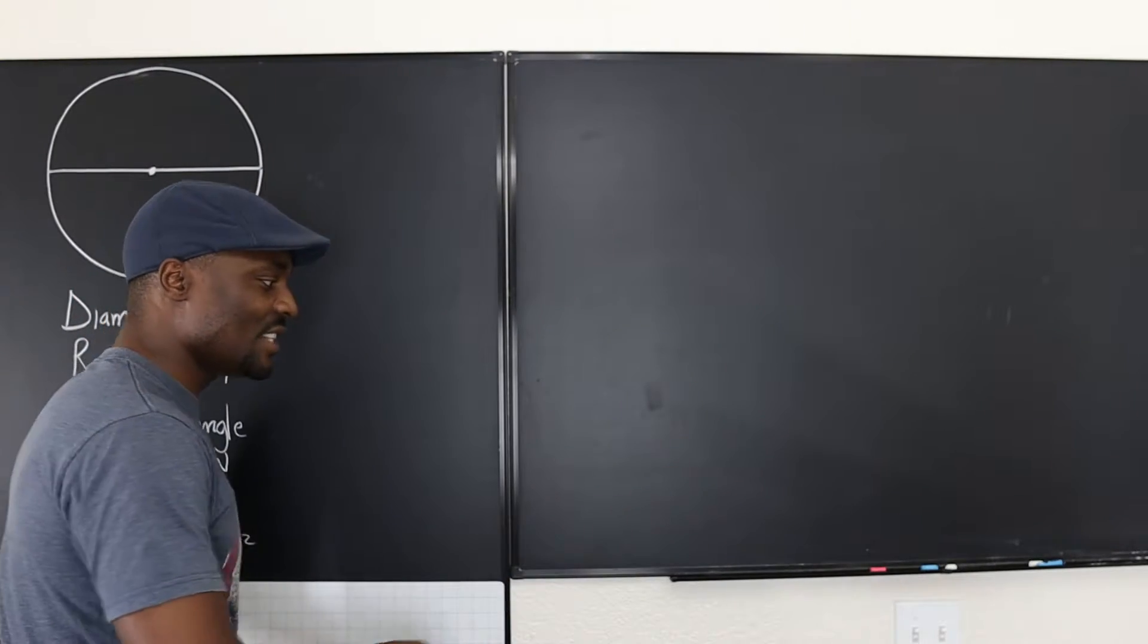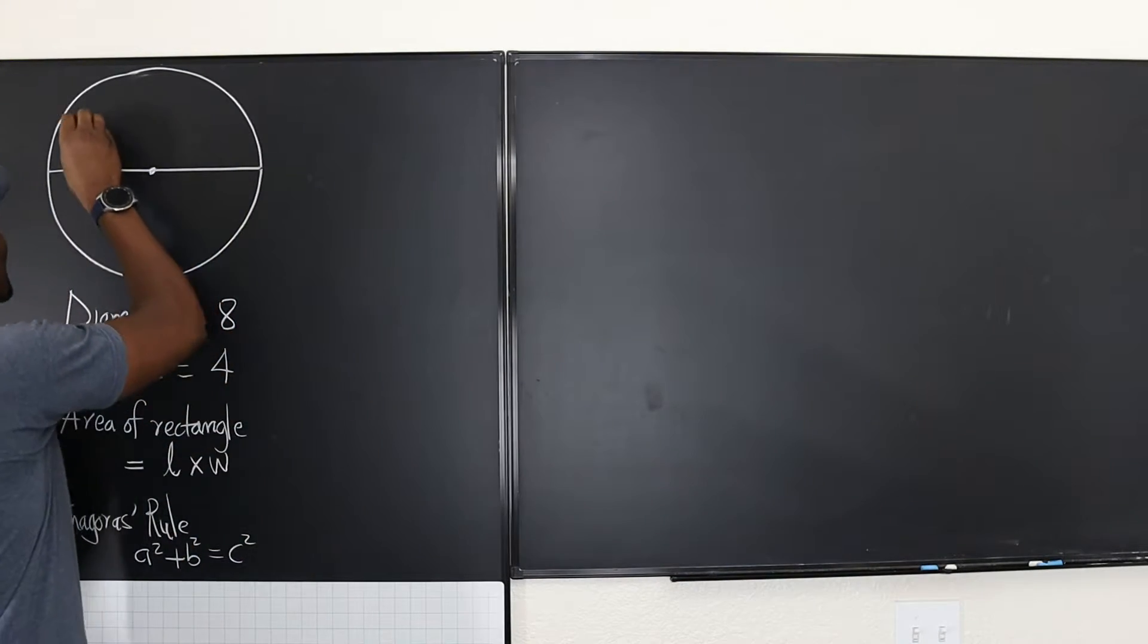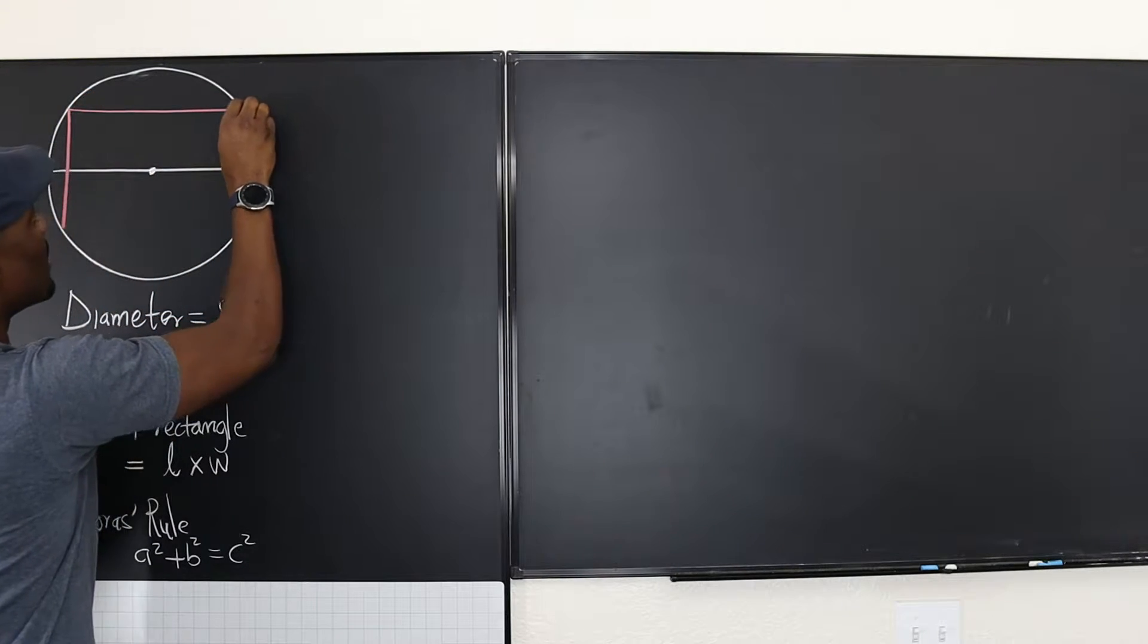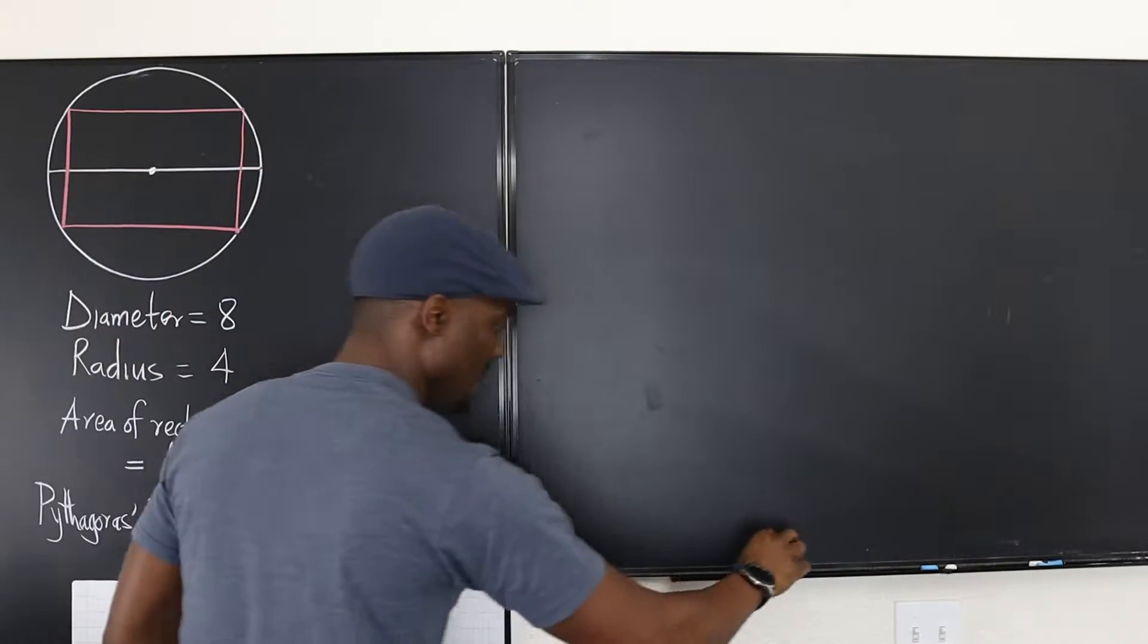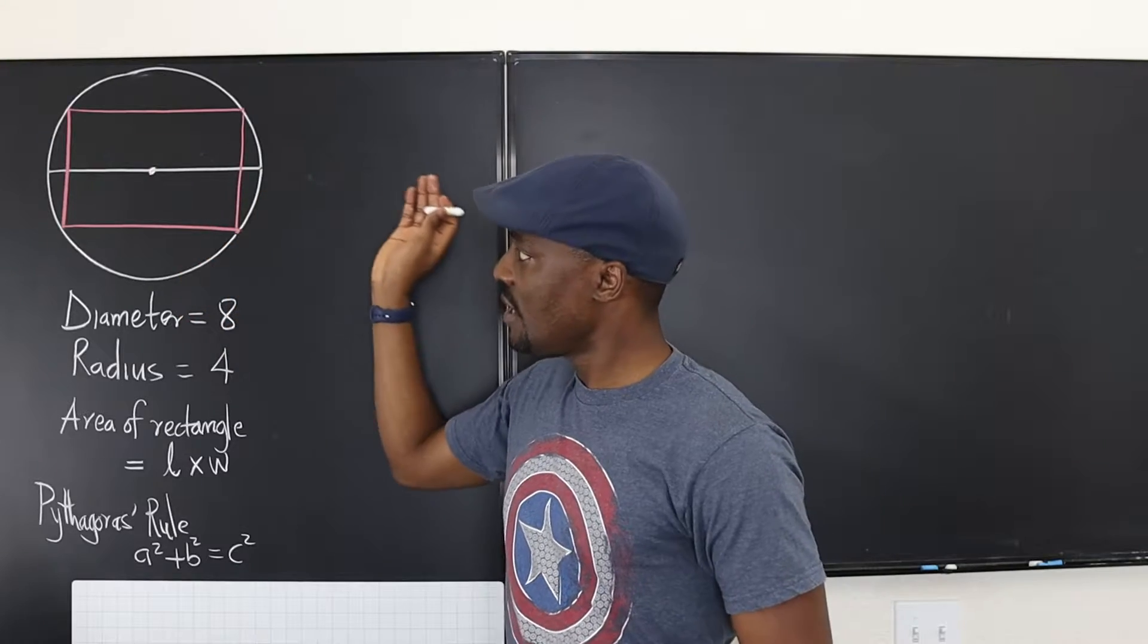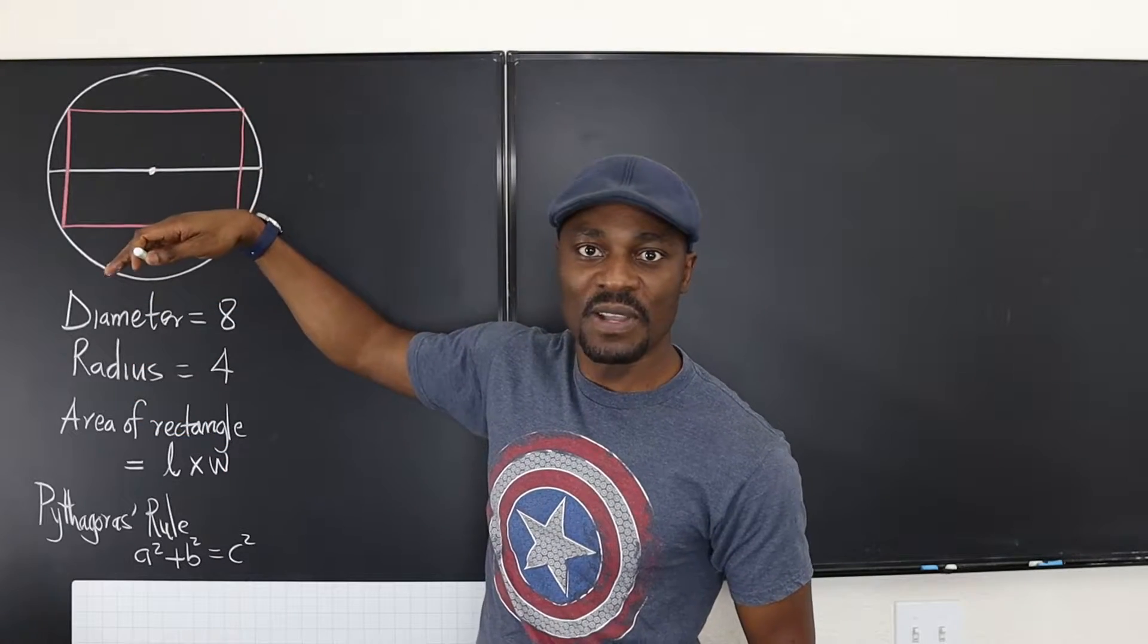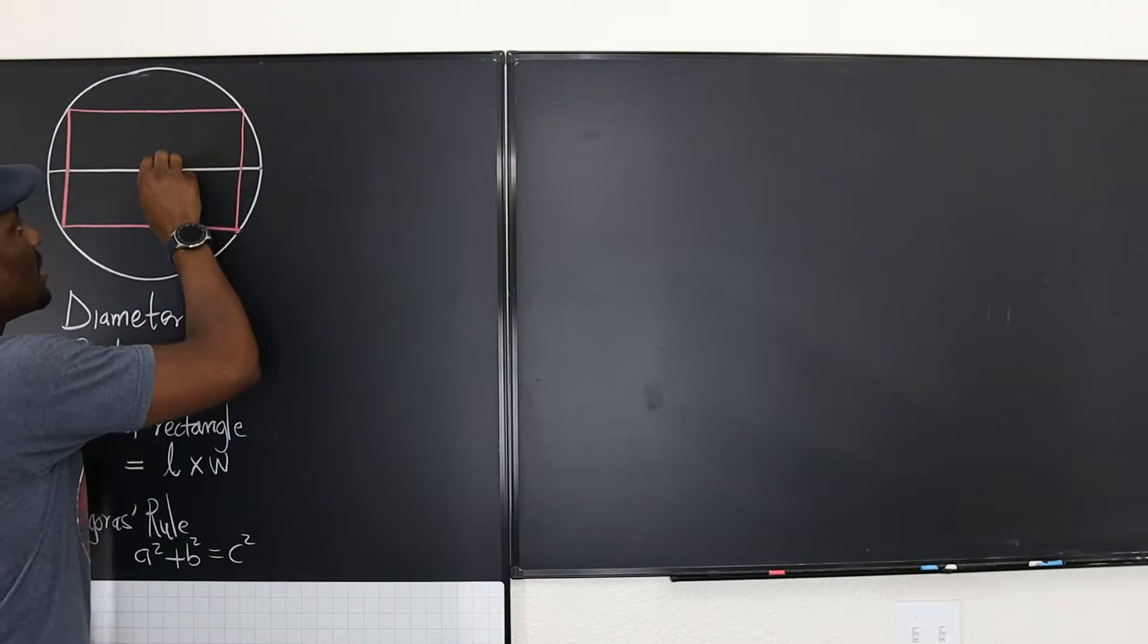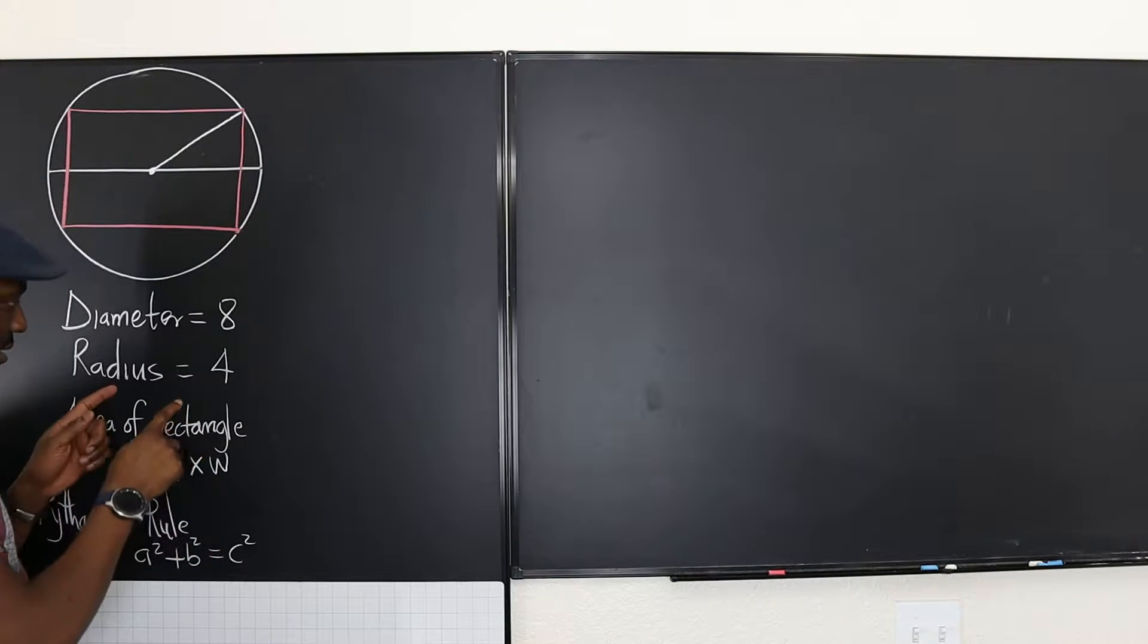So let's inscribe the rectangle, so you know what we're talking about. I mean the rectangle. So this is going to be like this. That's perfect. So that's the rectangle.